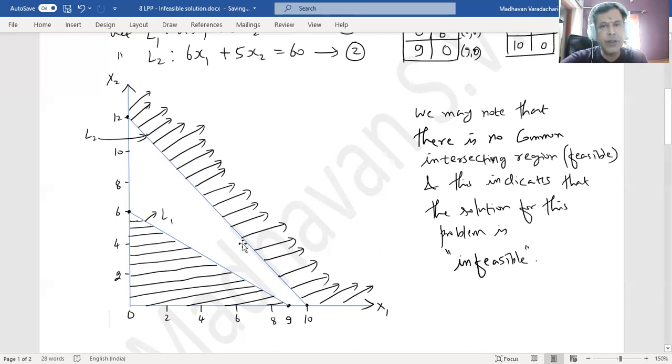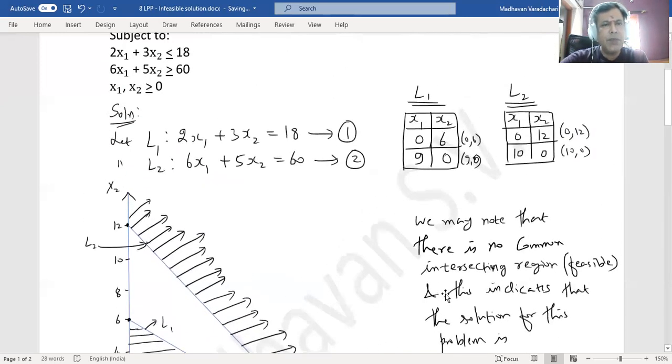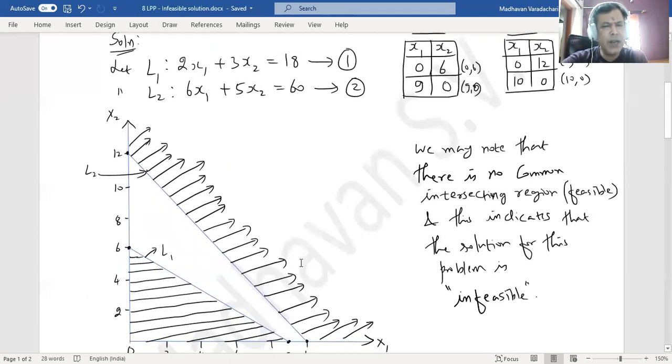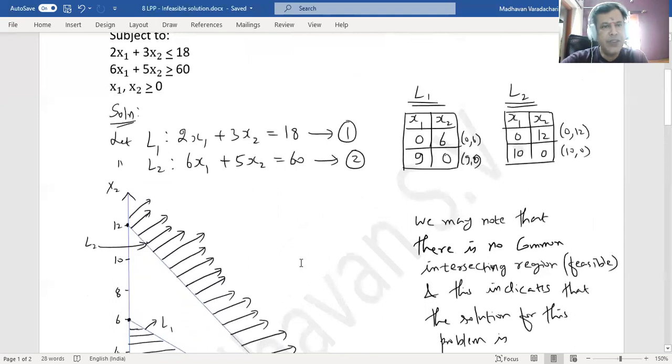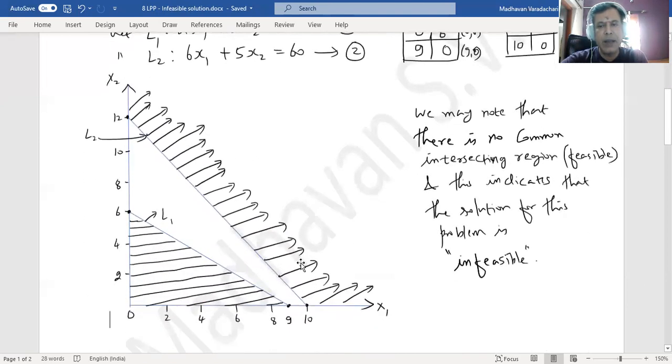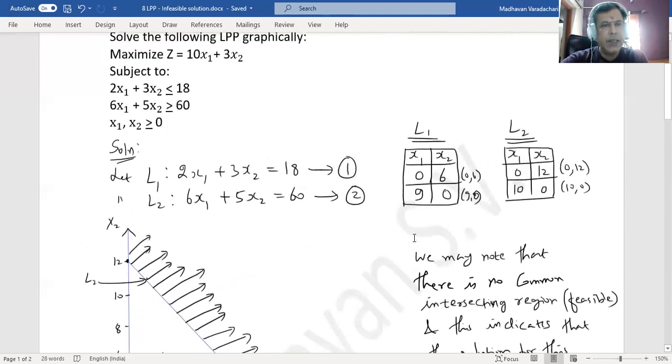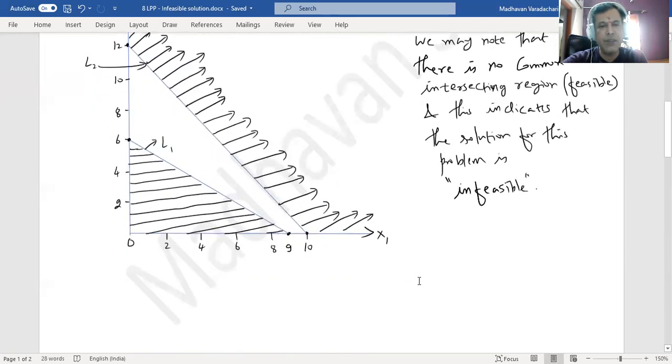Because we are not getting any common intersecting region, you cannot find out a solution for this particular problem. Such things may happen when we formulated the linear programming problem and some additional constraints we might have missed, or the formulation itself may be wrong. So such cases this can happen. Generally it won't happen. But if we have missed some of the variables involved in a particular real-life problem, this might occur. Generally we get proper feasible solutions. But in case we might have missed something, then we may land up with an infeasible solution.